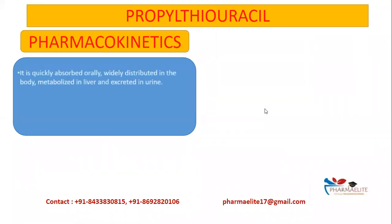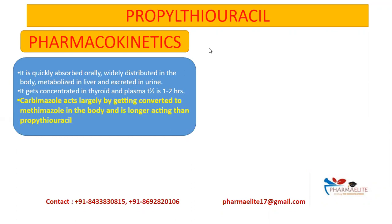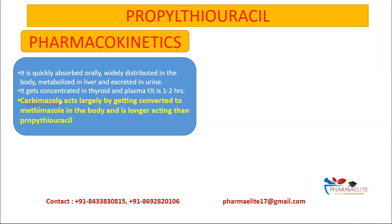Regarding pharmacokinetics: propylthiouracil is quickly absorbed orally, widely distributed, metabolized in the liver, and excreted via urine. It concentrates in the thyroid gland; plasma half-life is around one to two hours. Importantly, carbamazole is a prodrug that acts largely by being converted to methimazole in the body, making it longer acting than propylthiouracil.